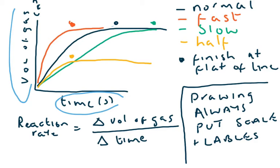A normal graph would be as you can see with the dark blue. If you increase the rate of reaction, you get a faster, steeper graph, as in the red. If you decrease the rate of reaction, you get a slower, narrower, lower graph, as you can see in the green. If the volume of materials and reactants being used is halved, then you get half the volume of gas being given off. The dots are where the graph for that particular colour finishes, i.e. when the graph flattens out.